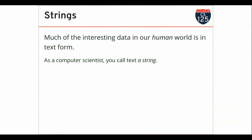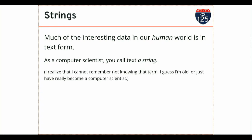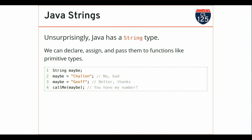We also ask you to provide text to authenticate things. A lot of the interesting data in the world around us is in textual form. As a computer scientist, starting today you will call text a 'string.' A string is a unit of text consisting of a sequence of characters. In Java, textual data is so important that we have a special type for working with it, called String — and it's capitalized. That's interesting, important, and significant. We'll come back to why in a minute.